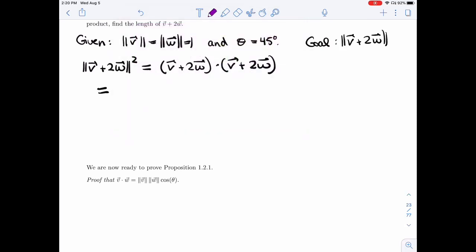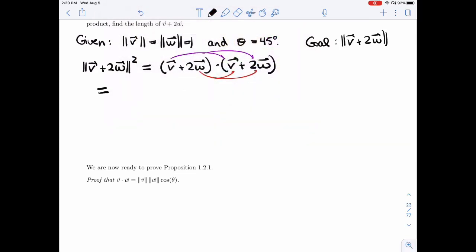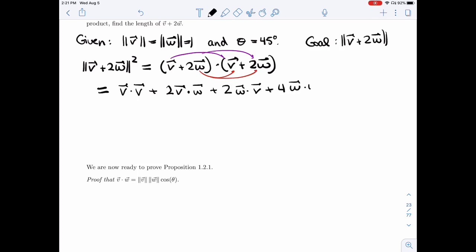I'm going to get four terms like this and two underneath. I will get V dot V plus 2W dot V plus 2V dot W. I'm sorry, I should have put them in the other way. So 2V dot W plus 2W dot V plus 4W dot W.